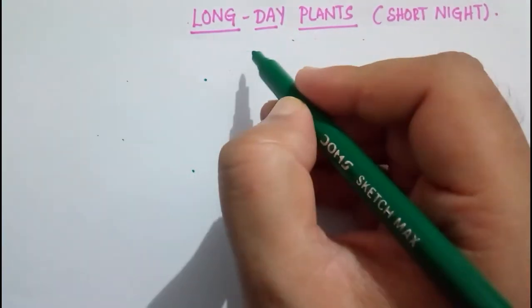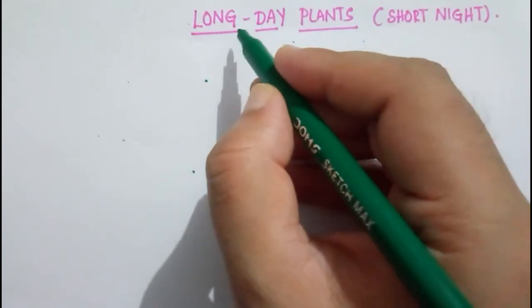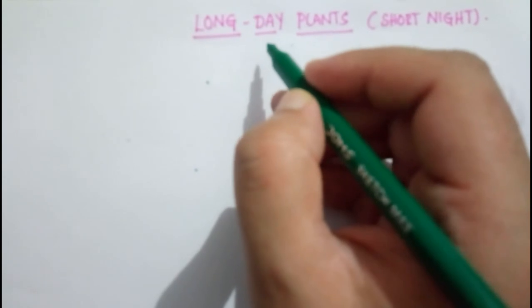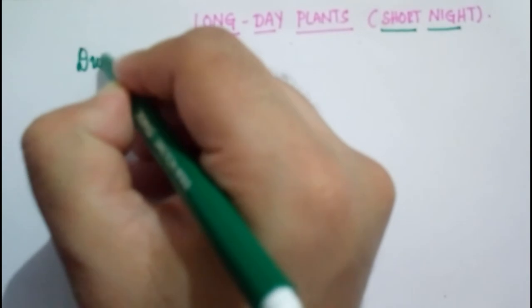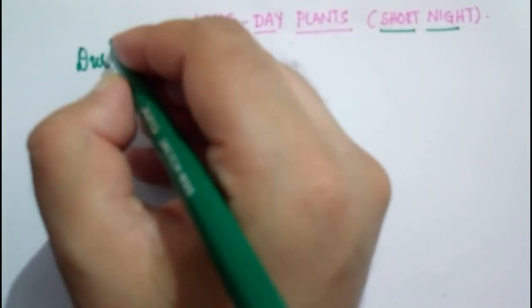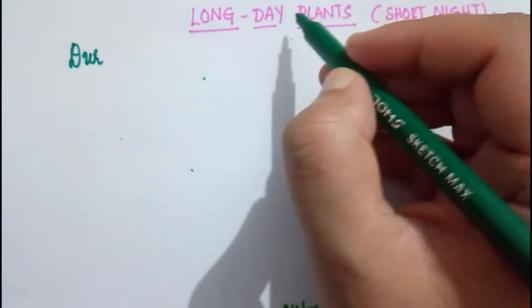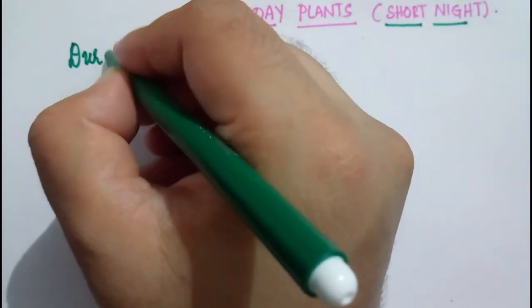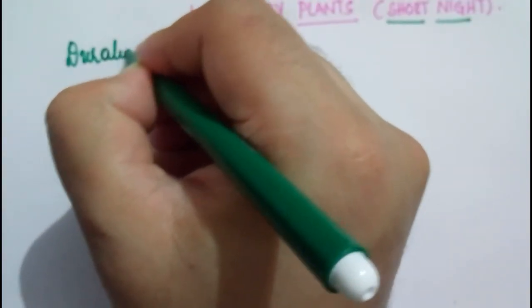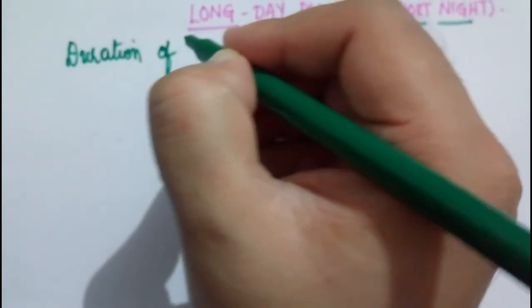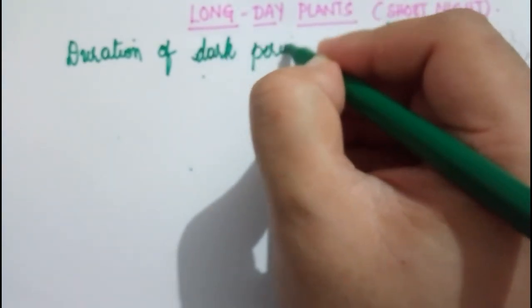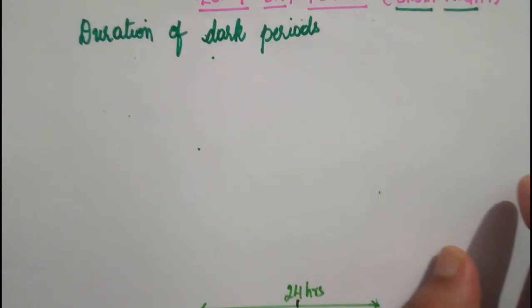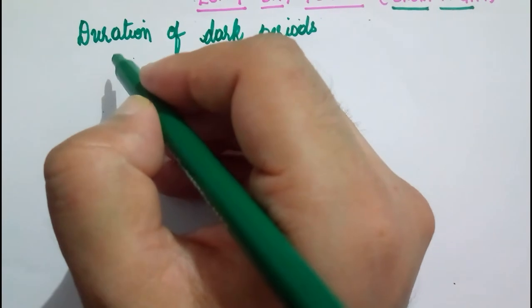In the last video we covered short day plants, and now we will be seeing the long day plants. Long day plants are also called short night plants, because plants actually measure the duration of darkness. Initially it was thought that plants measure the day length, but later experiments proved that plants actually measure the duration of dark periods.